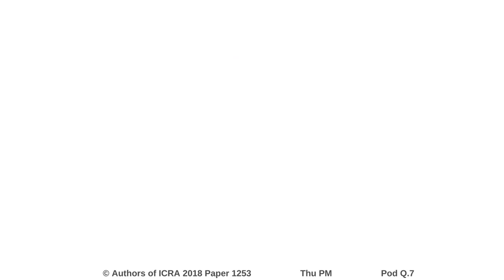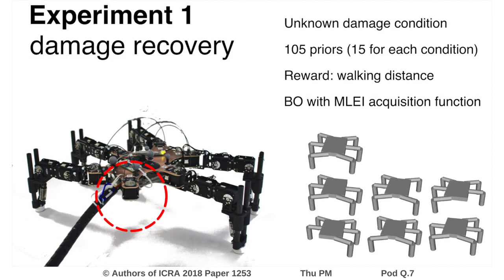We demonstrate our method on a six-leg robot with an unknown damage that has to learn to walk again. The priors are generated beforehand in simulation and are encoded as the mean function of traditional Gaussian processes. We use 15 priors for each of six different conditions plus the intact robot — that is, we can use any of the 105 priors if they are helpful.